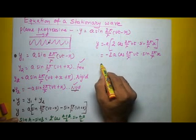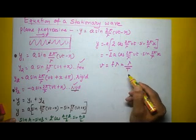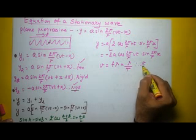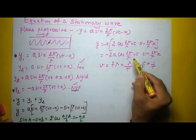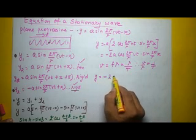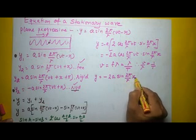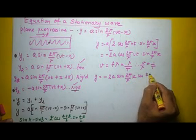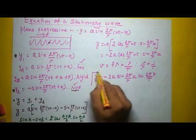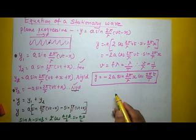We know that the velocity of a wave equals frequency times lambda, which equals λ/T, so v/λ = 1/T. Substituting v/λ = 1/T into the equation, the final form of the equation for the stationary wave becomes y = −2a sin(2π/λ · x) cos(2π/T · t). This is the final equation for the stationary wave.